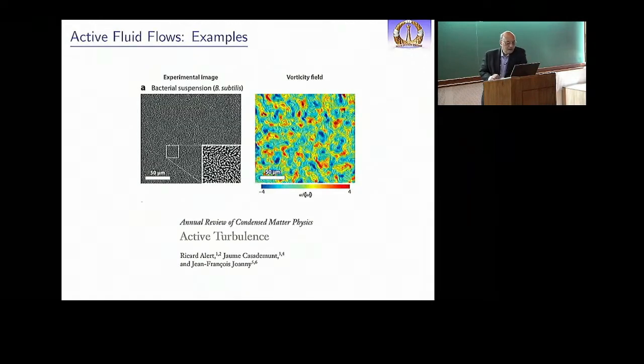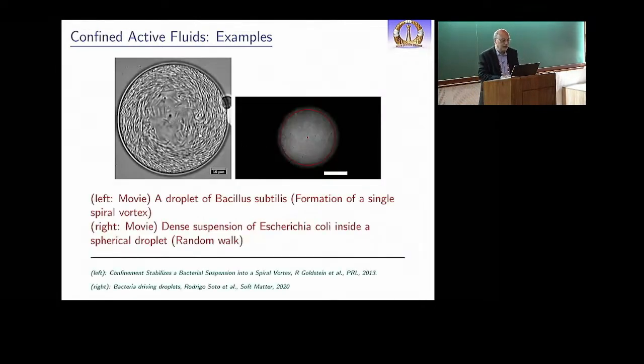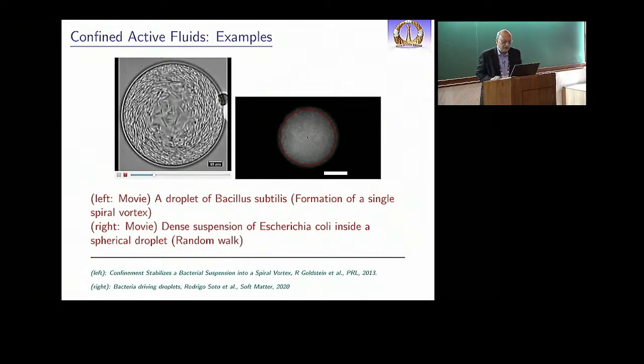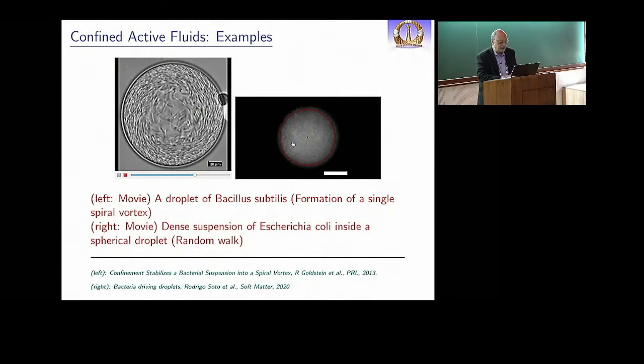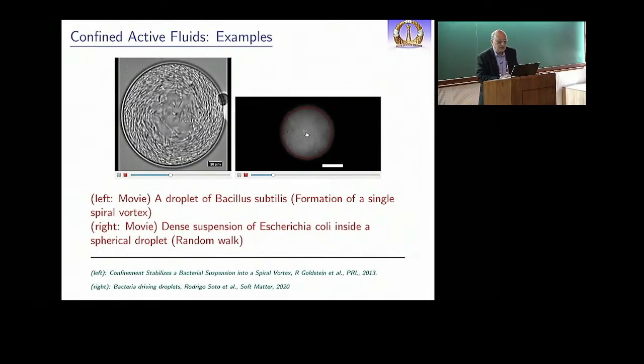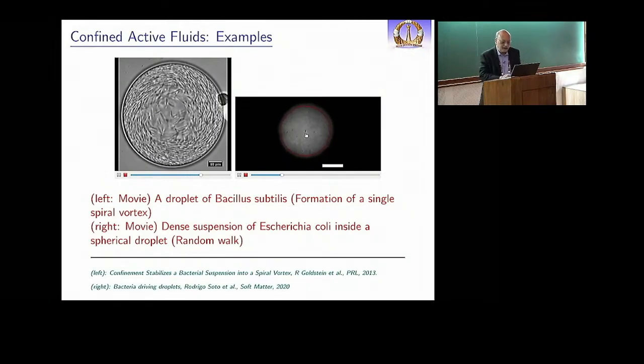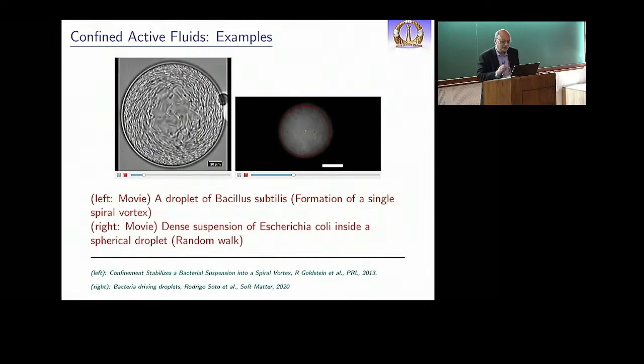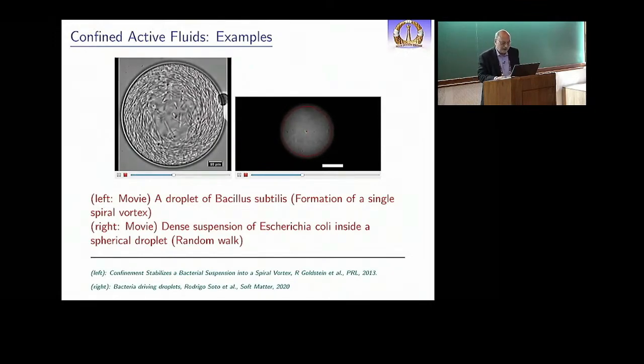Active fluid examples—all of you know this well. This is a very well-known review; one of the authors is in the audience. It tells you about how bacterial suspensions of systems like B. subtilis set up flows for which the vorticity field looks pretty turbulent by any measure. Then there are also confined active fluids. I'll show you a movie here of Bacillus subtilis formation of a single spiral vortex and a dense suspension of E. coli inside a spherical droplet. If you look carefully, the center of mass is random walking.